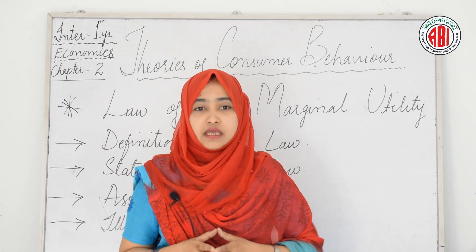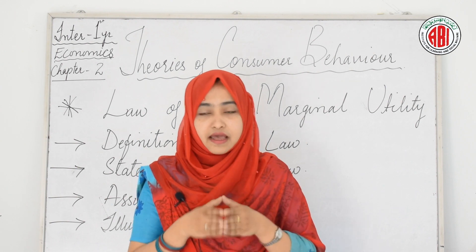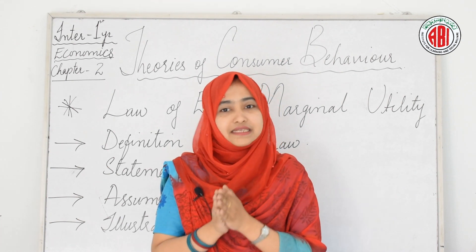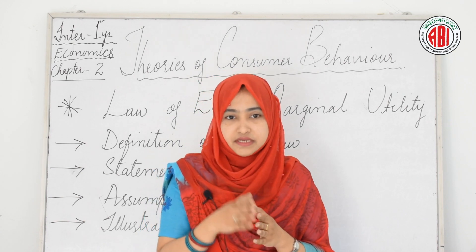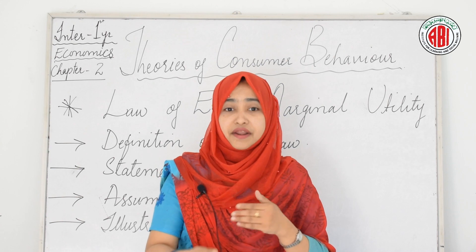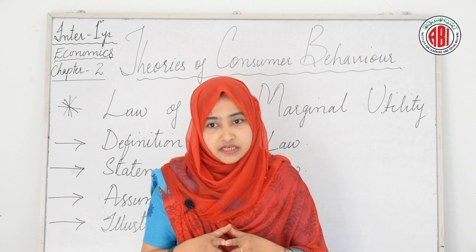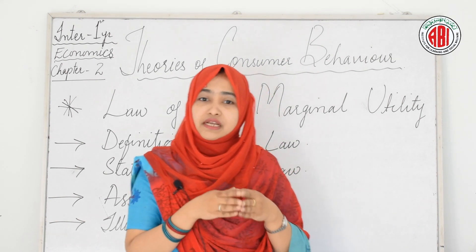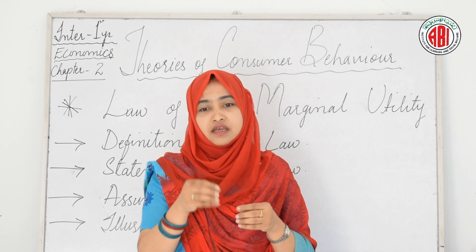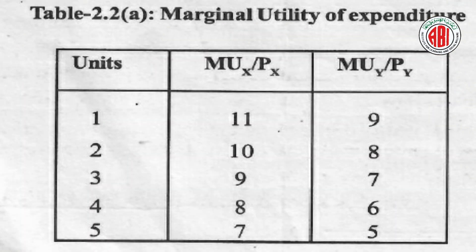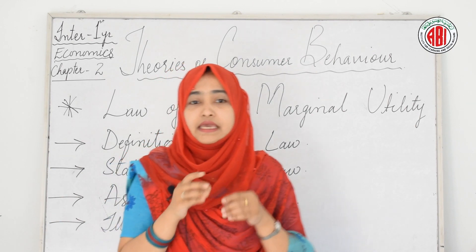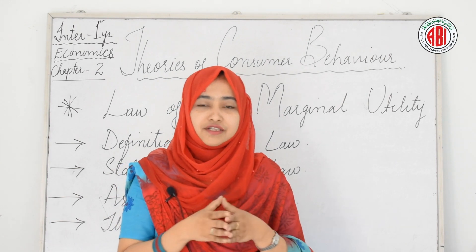To find the consumer's maximum satisfaction and equilibrium position, we divide the marginal utilities of X by its price of rupees 3 (MUX/3) and the marginal utility of Y by its price of rupees 4 (MUY/4). A reconstructed table shows the utility per rupee of expenditure. Observing this table, if the consumer purchases a combination of 4 units of X and 2 units of Y, he fulfills all equilibrium conditions.